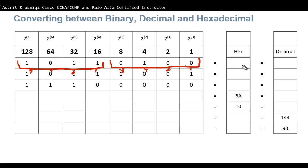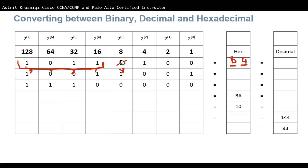The right four bits give the right hex digit and the left four bits give the left hex digit. For example, the right side represents 4 and nothing else, so that's 4. The left side: 8 plus 2 is 10, plus 1 is 11, which is B. So in hexadecimal this is B4. To convert to decimal: 128 plus 32 is 160, plus 16 is 176, plus 4 is 180.